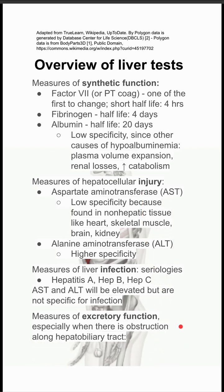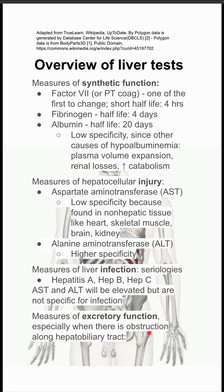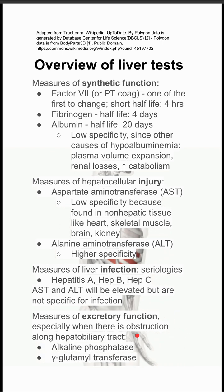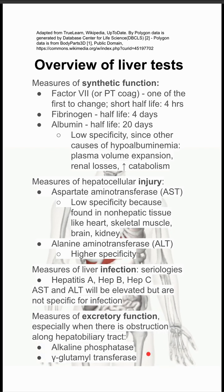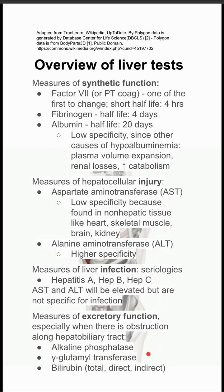Lastly, there are measures of excretory function. This is especially relevant when there's obstruction of the hepatobiliary tract. You can use alkaline phosphatase, gamma glutamyl transferase, and bilirubin.